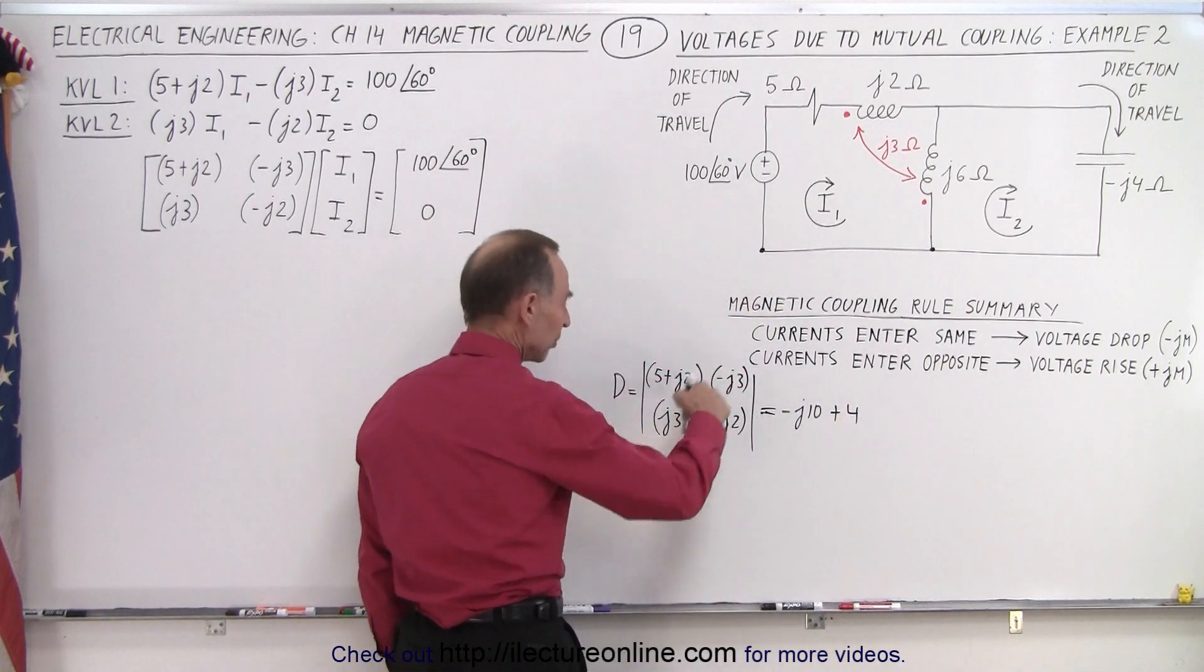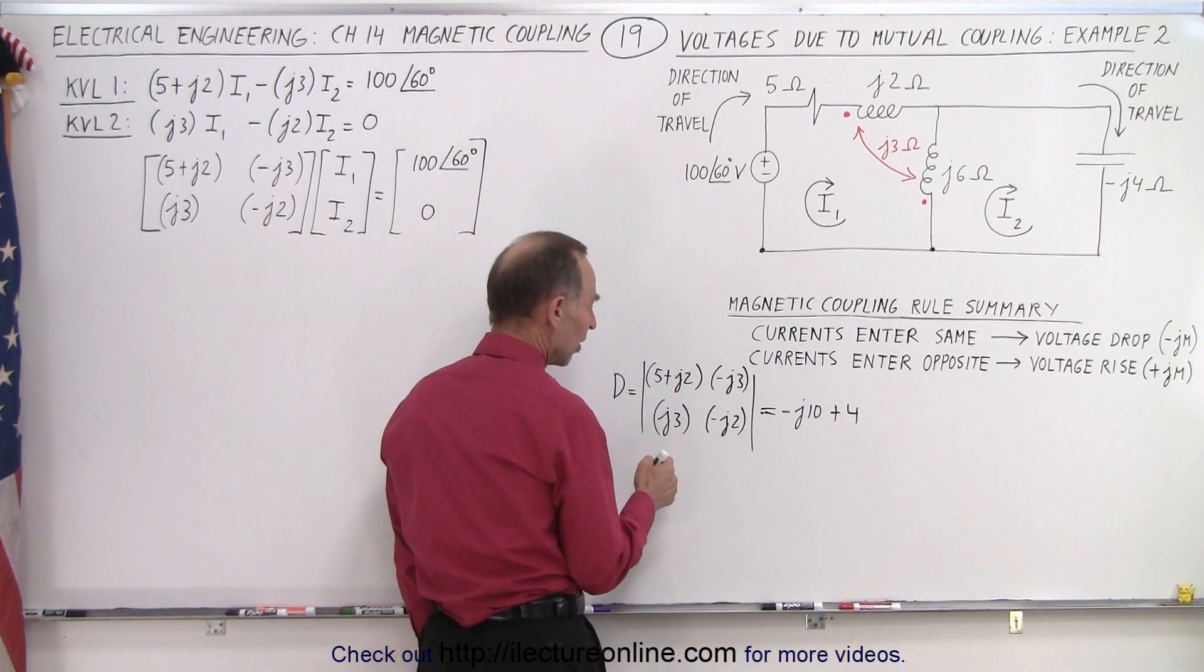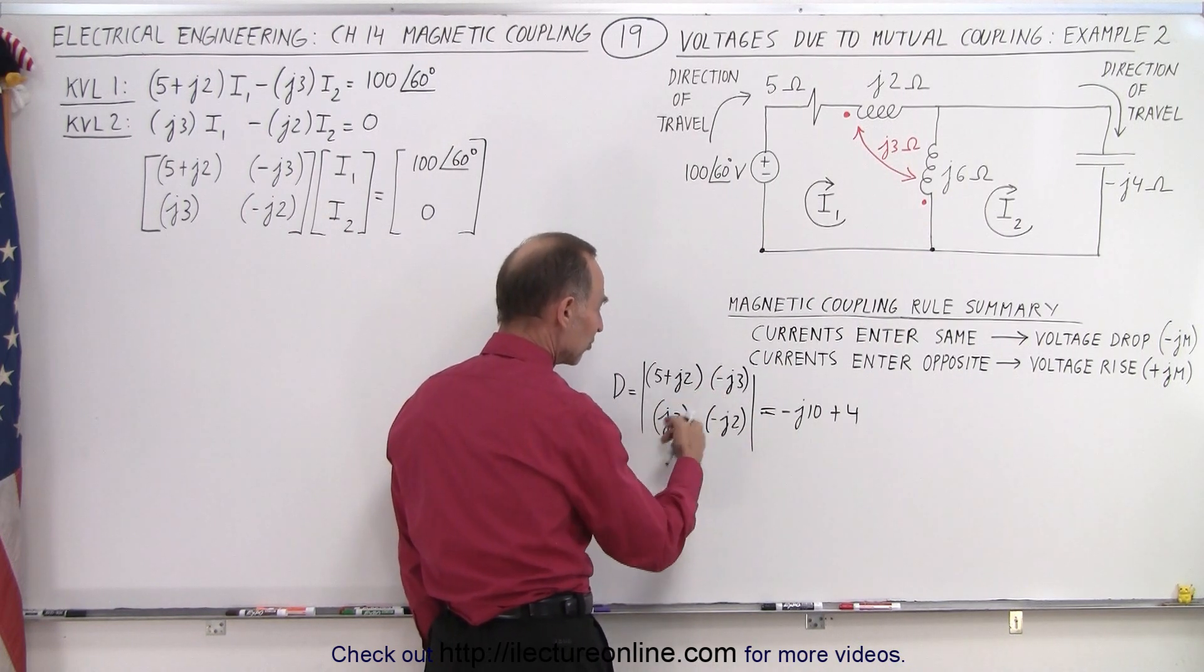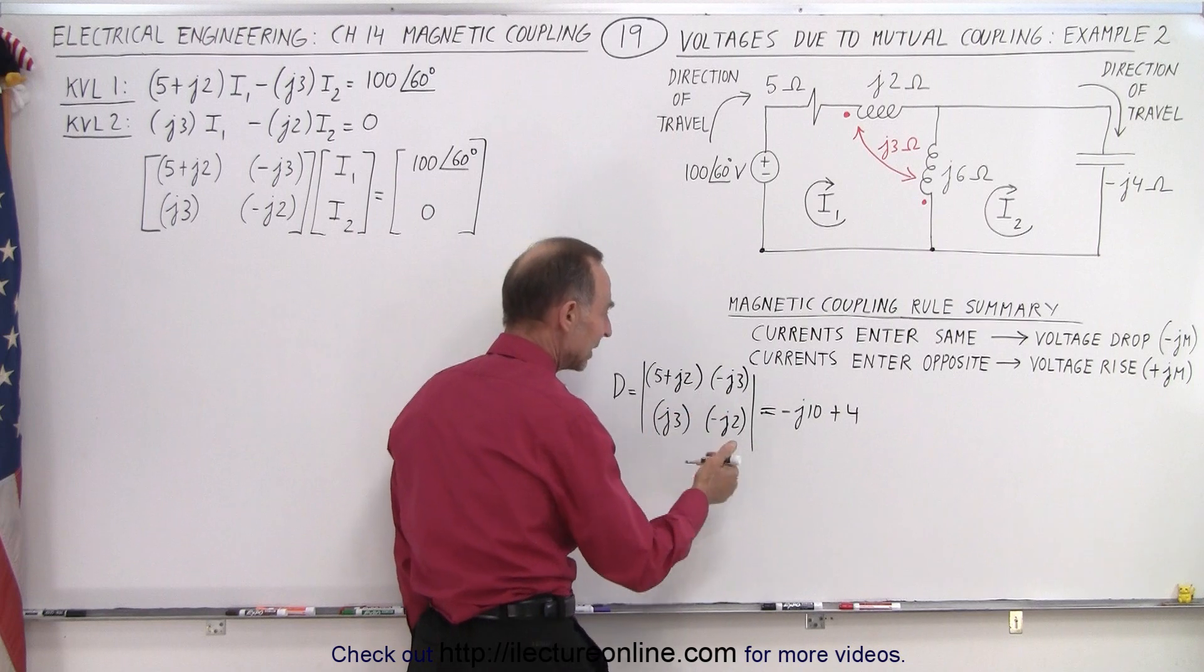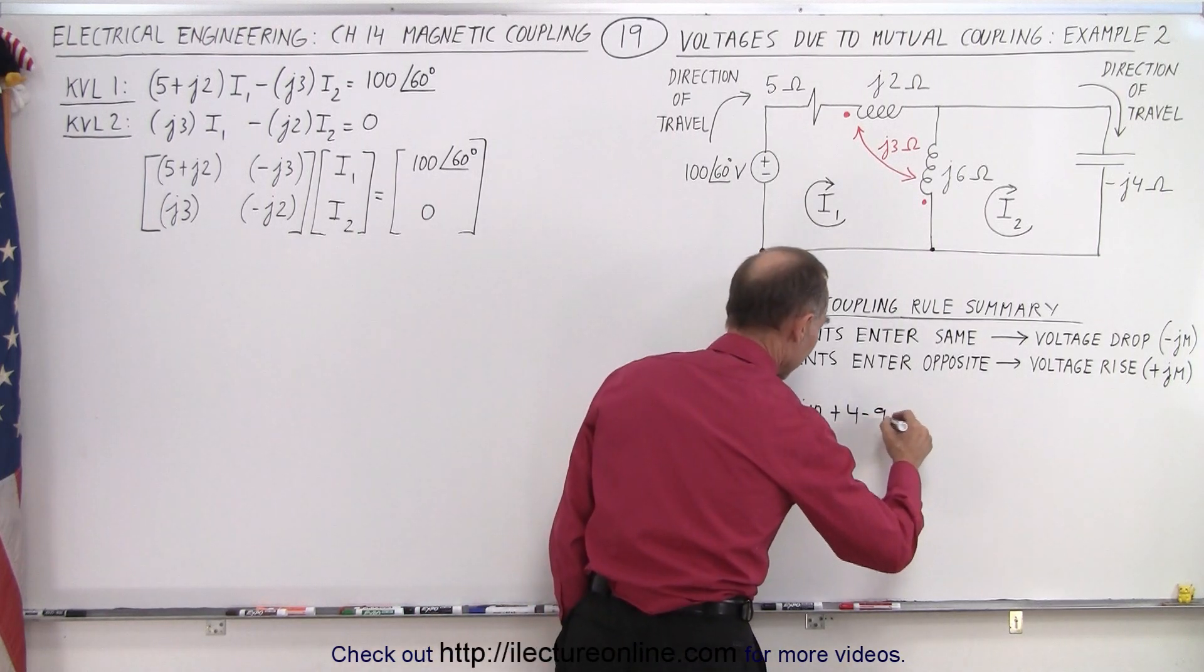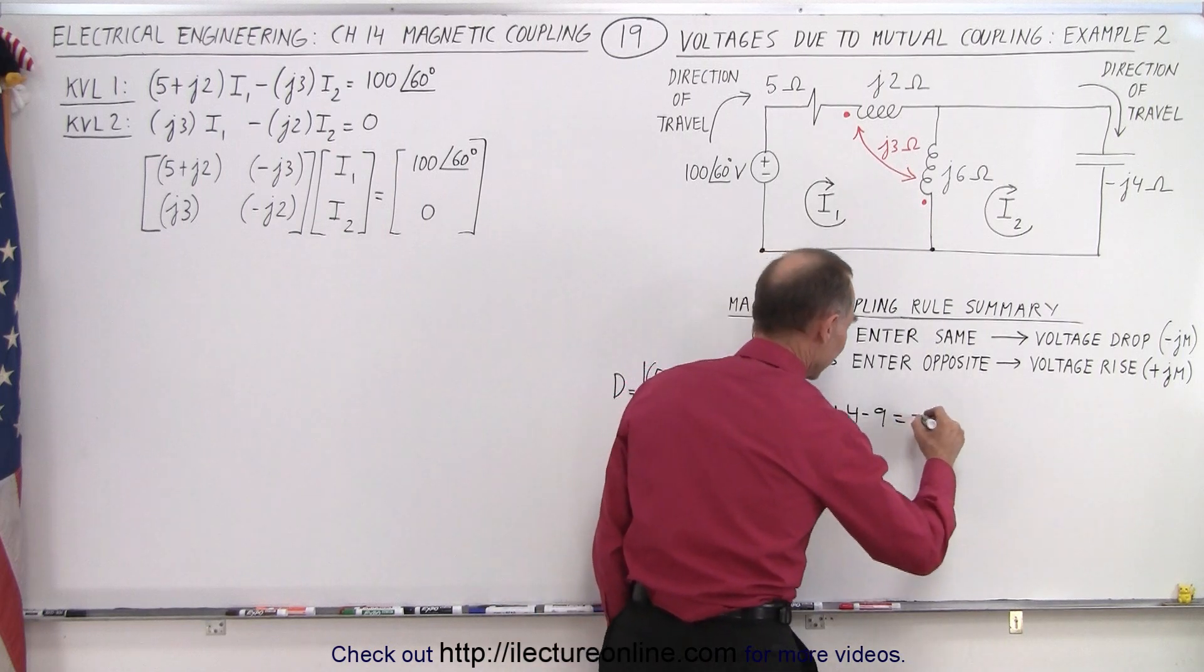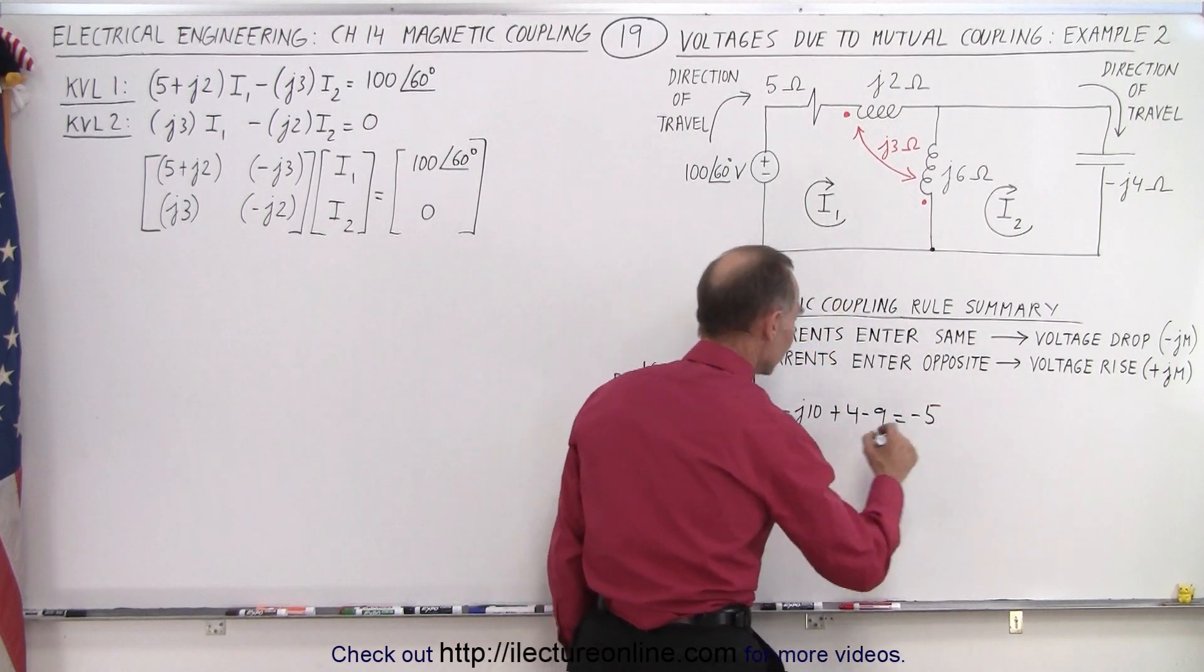Now we subtract the product of these two. We subtract, and there's a negative sign that makes it positive, but then J times J gives you a negative again. So that would be a negative 9. And if we simplify that, we have negative 5 and minus J10.